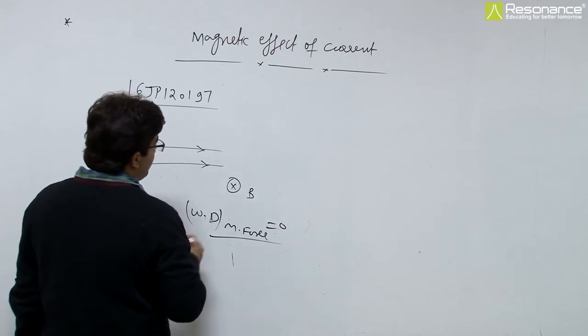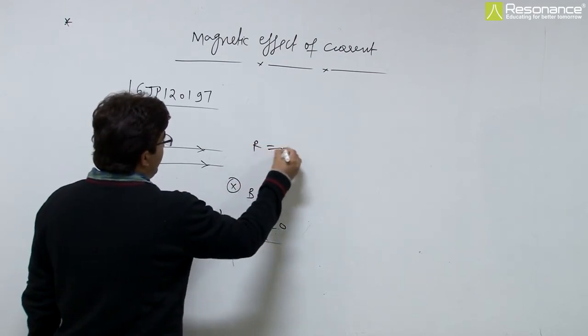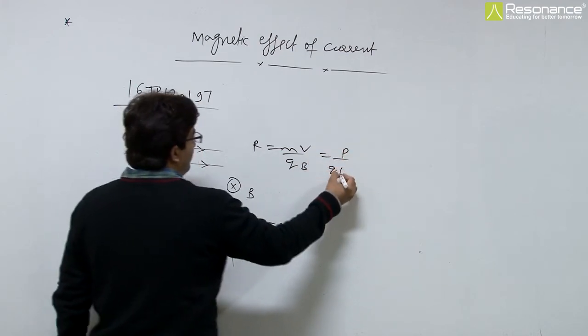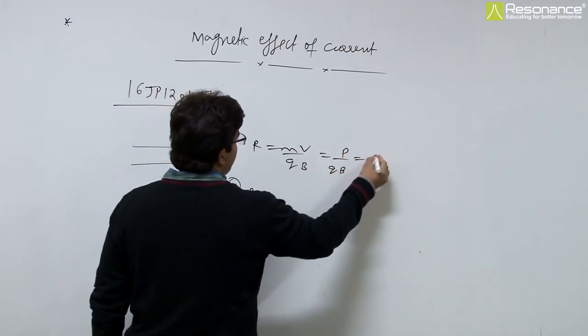For the radius, we have mv upon qv. Since mv can be written as p, this becomes p upon qv. And since q can be e, we get p by ev.